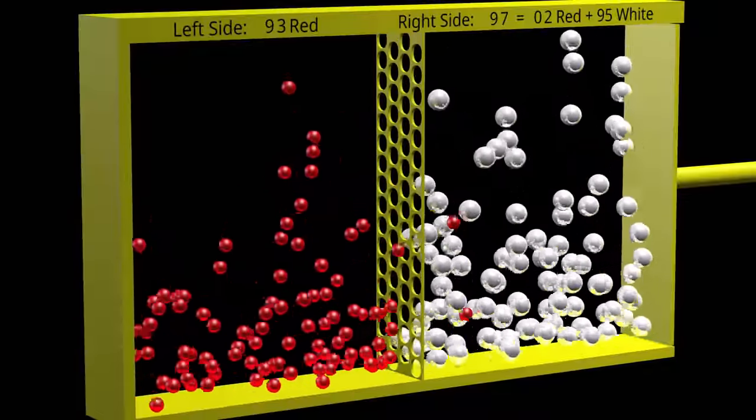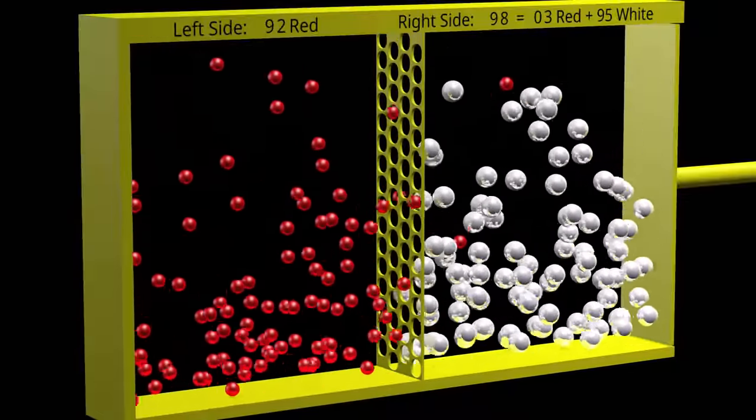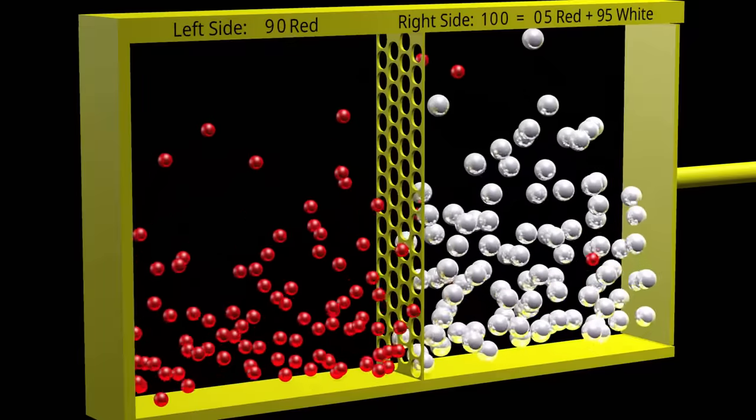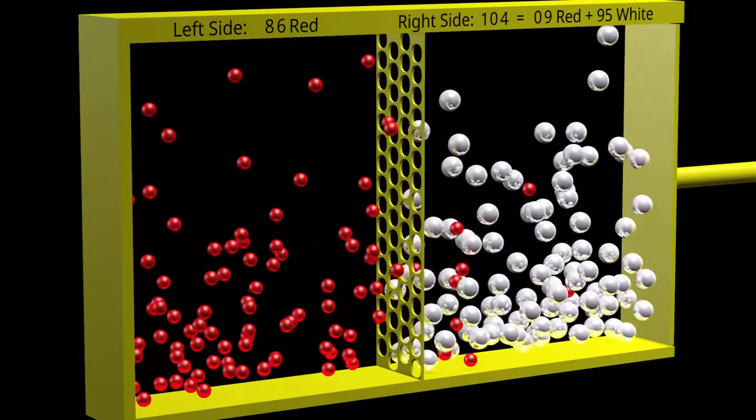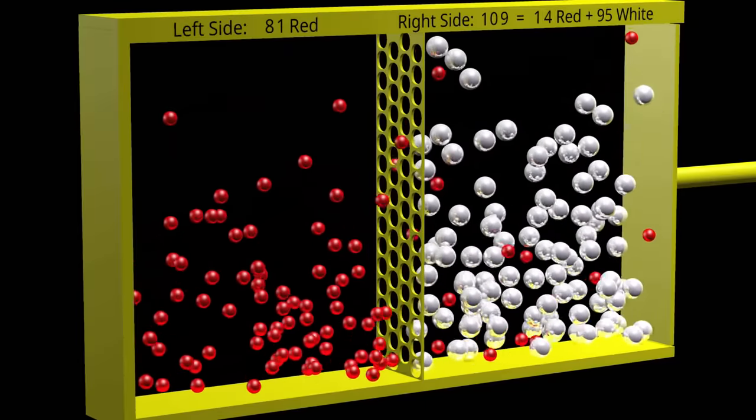Suppose the red balls represent water and the white balls represent salt ions. The process of osmosis causes more water molecules to move towards the side with the salt ions.